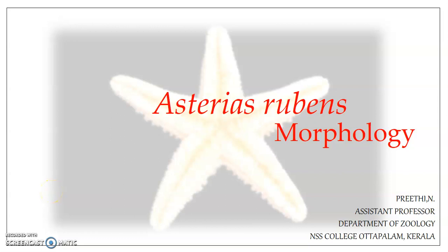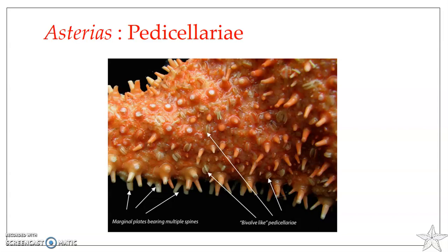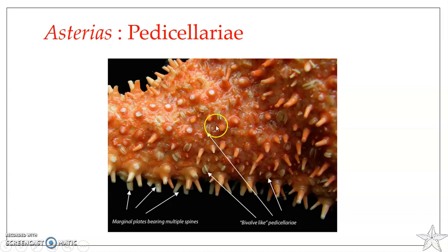Hello everyone, welcome back to the session on morphology of Asterias rubens. In this presentation, we will be looking into the structure and function of pedicillariae. You can see in this figure these structures found on the arms, in between and around the spines or tubercles — they are the pedicillariae.